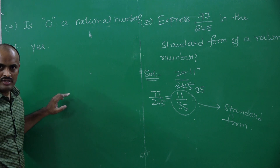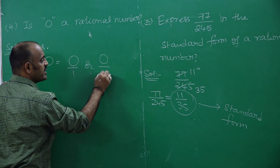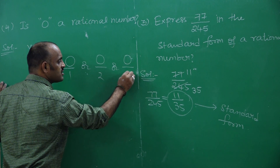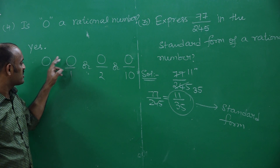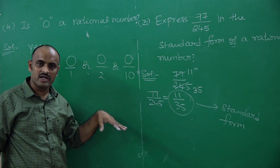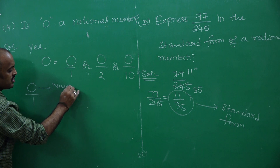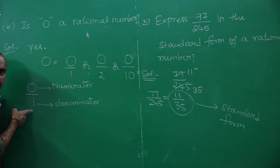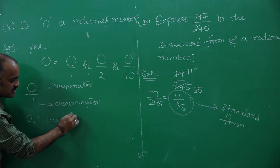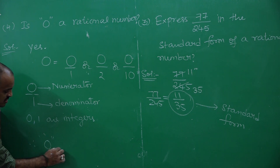Is 0 a rational number? Yes, 0 is a rational number. The reason is that 0 can be written as 0 by 1, or 0 by 2, or 0 by 10 — anything, because when you divide 0 by any number other than 0, it gives 0 again. Here, 0 is the numerator and 1 is the denominator. Both 0 and 1 are integers, and the denominator is not equal to 0. Therefore, it is in the form of a rational number — 0 is a rational number.